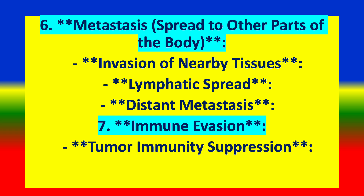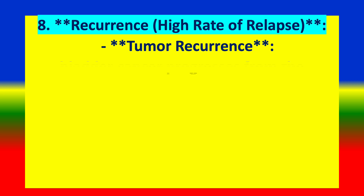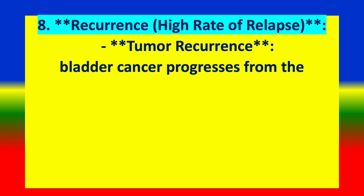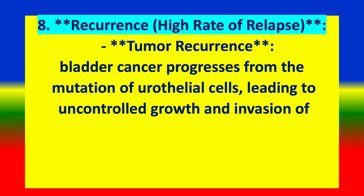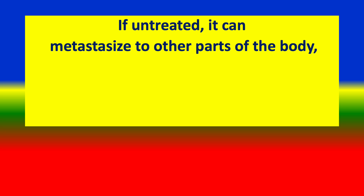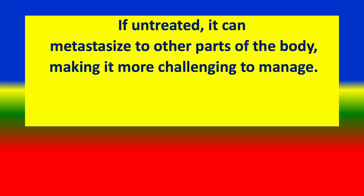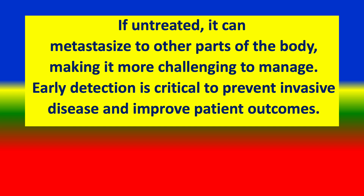7. Immune evasion — tumour immunity suppression. 8. Recurrence — high rate of relapse and tumour recurrence. Bladder cancer progresses from mutation of urothelial cells, leading to uncontrolled growth and invasion of surrounding tissues. If untreated, it can metastasize to other parts of the body, making it more challenging to manage. Early detection is critical to prevent invasive disease and improve outcomes.